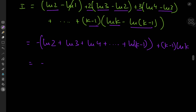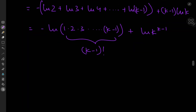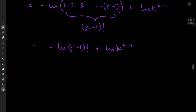Using properties of the logarithm, we combine all the negative logarithm terms into negative log(1 times 2 times 3 ... times (k-1)), which is negative log((k-1)!). The surviving positive term is (k-1) times log k, which equals log(k^(k-1)). So the integral I equals log(k^(k-1)) minus log((k-1)!), which combines to log(k^(k-1) / (k-1)!). That's a pretty cool result.